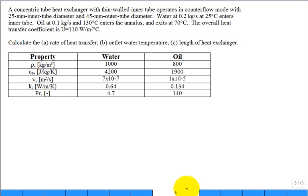A concentric tube heat exchanger with thin-walled inner tube operates in counter-flow mode. Interpret what that term right there, thin-walled inner tube mean. Thin-walled. It's going to be a negligible resistance to conduction through that wall.